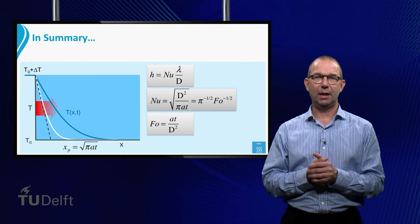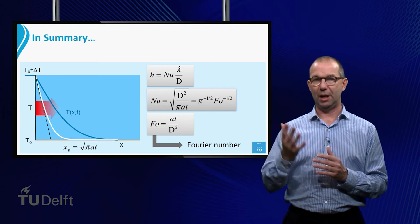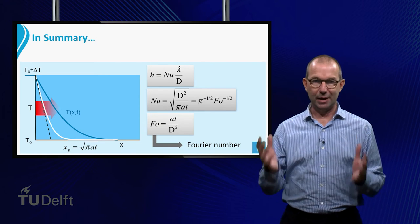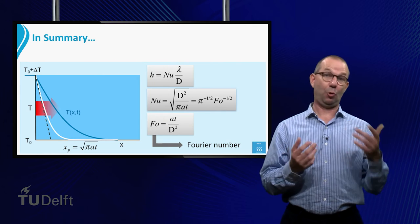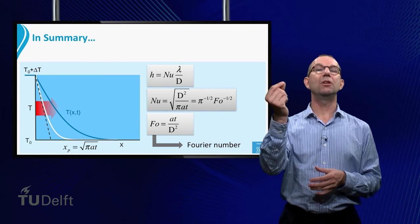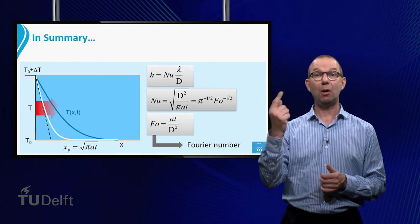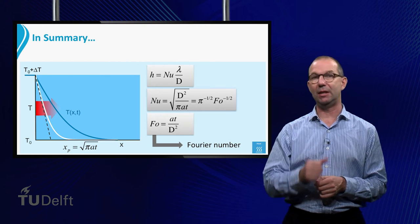We can write the right hand side using the Fourier number Fo. This number is defined as AT over d squared. It gives the dimensionless time. We will come back to this number extensively in the next lecture.